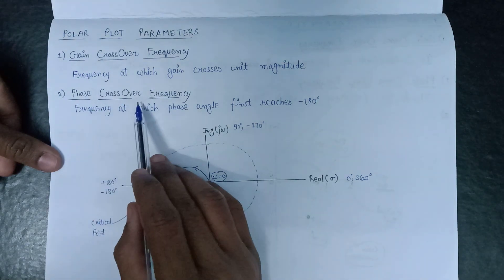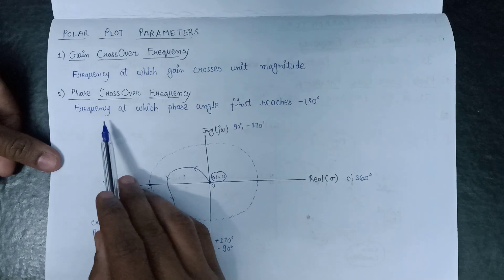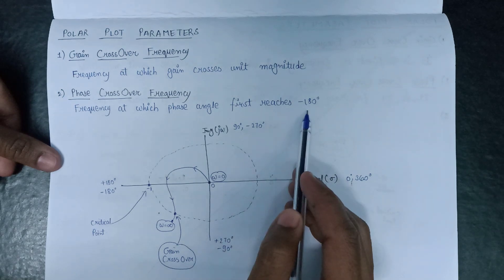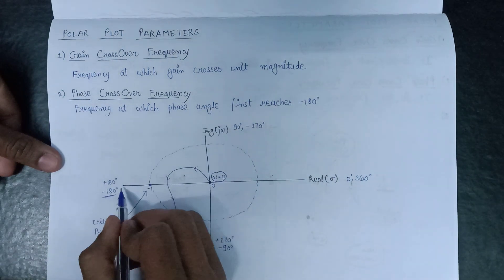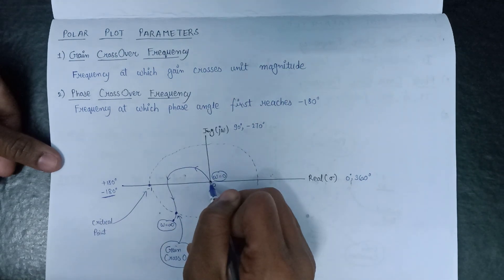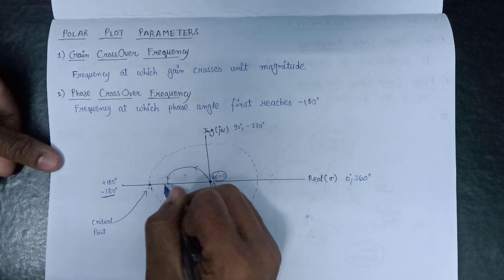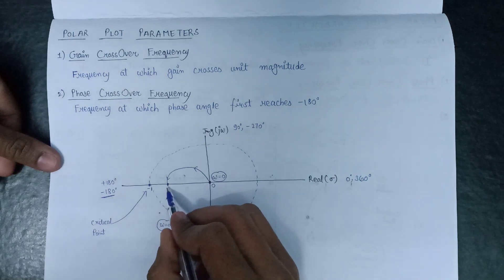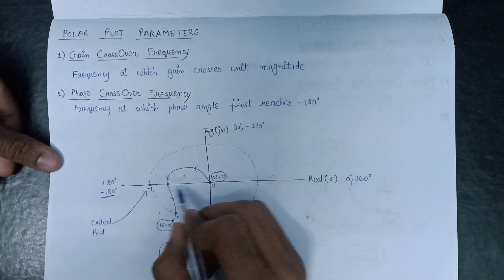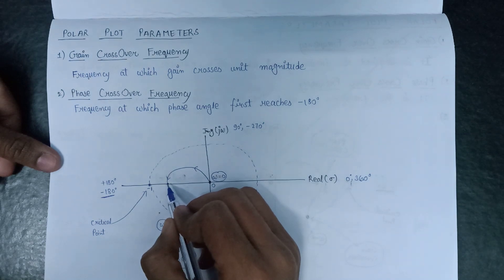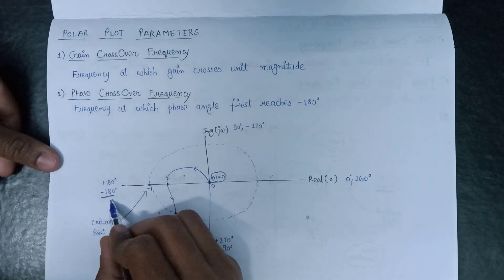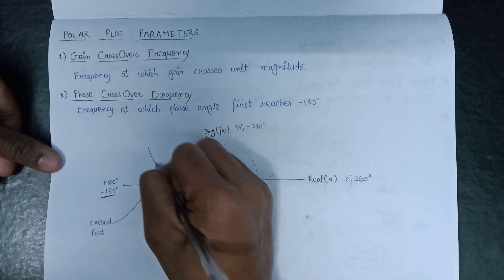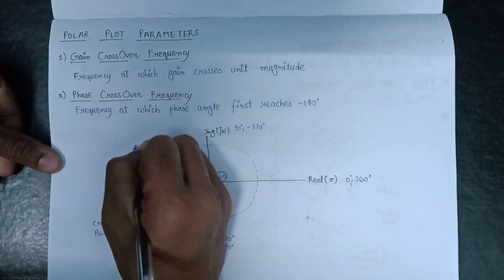Now let's understand phase crossover frequency. It is the frequency at which the phase angle first reaches minus 180 degrees. Here, minus 180 degrees lies on the real axis, and our polar plot is intersecting this real axis at minus 180 degrees. The value of omega at which the polar plot intersects the real axis at minus 180 degrees is the phase crossover frequency.